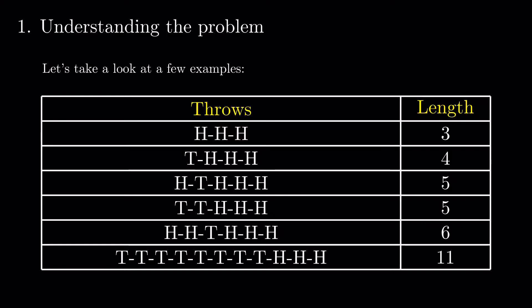Similarly, there is only one sequence that has exactly four tosses, and two that have exactly five. We should also note that there is no upper limit on this length. For example, you can have any amount of tails leading up to three consecutive heads.